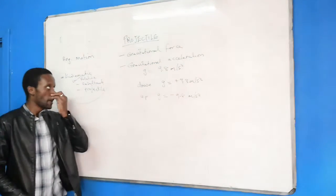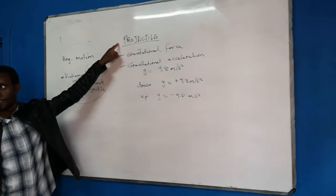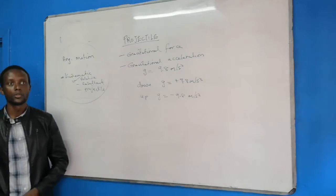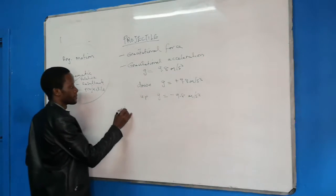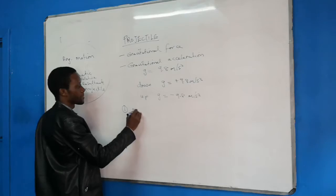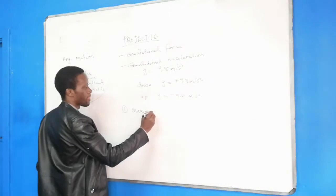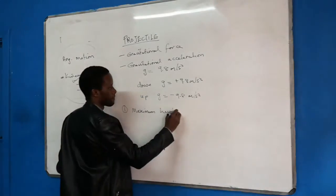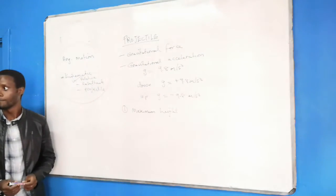Under projectiles, there are three things you need to know. Number one, you need to know how to calculate the maximum height — how high the object can go.